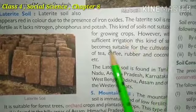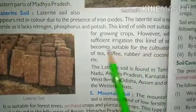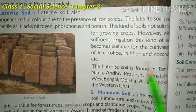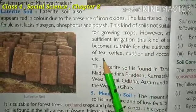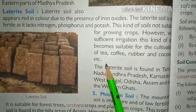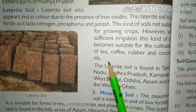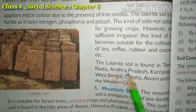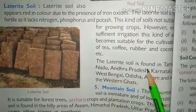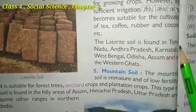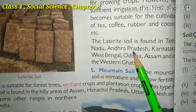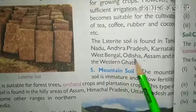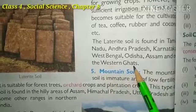However, with sufficient irrigation, this kind of soil becomes suitable for the cultivation of tea, coffee, rubber, and coconut. With proper irrigation, tea, coffee, rubber, and coconut can be grown in this soil. The laterite soil is found in Tamil Nadu, Andhra Pradesh, Karnataka, West Bengal, Odisha, Assam, and on the Western Ghats.